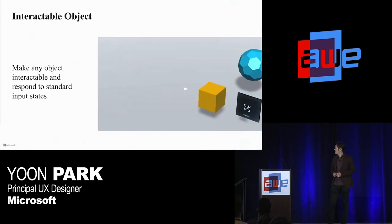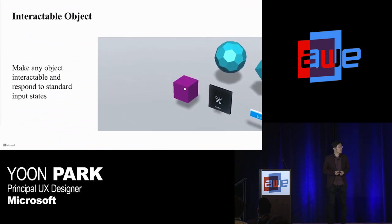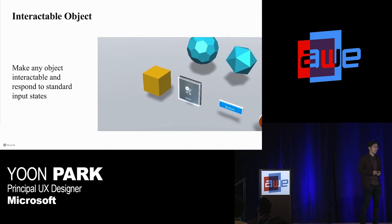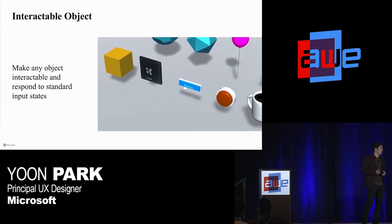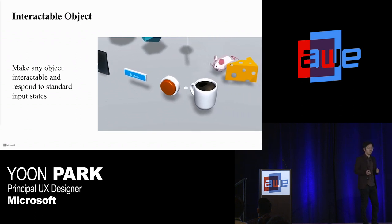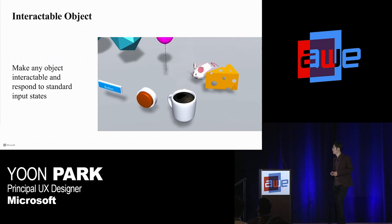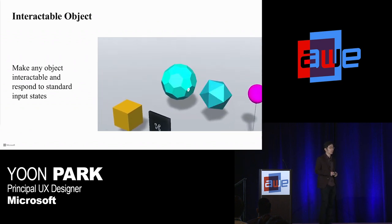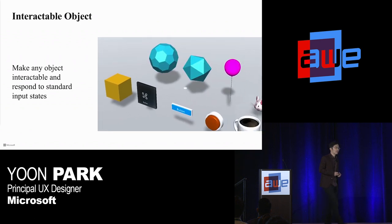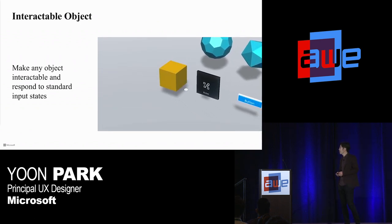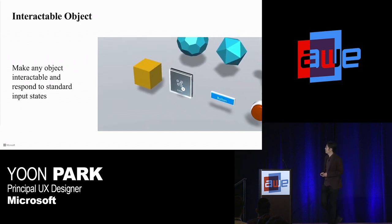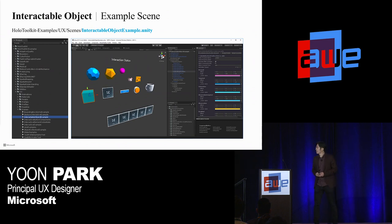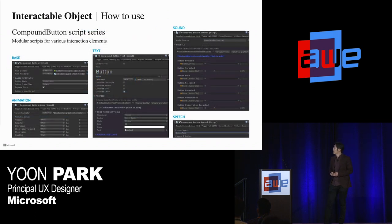Next, interactive object and receiver. The Interactive Object examples show how you can make an object interactable and respond to standard interaction states. In Mixed Reality, anything could be a button — it could be a coffee cup or a balloon that triggers some action. It doesn't have to be a rectangular flat 2D button. It is important to provide proper visual feedback so people can understand which object is interactable in the scene. You can find this example scene under examples, UX, and scenes folder — it's named Interactable Object Example Scene.